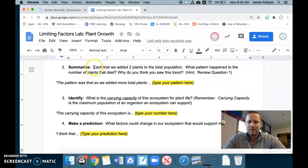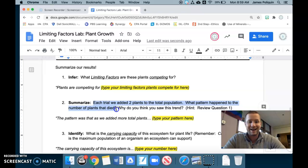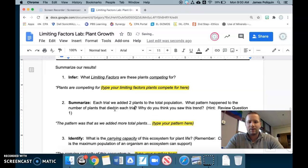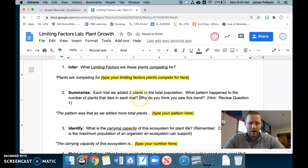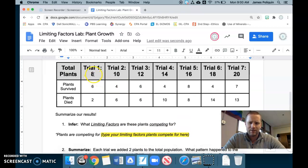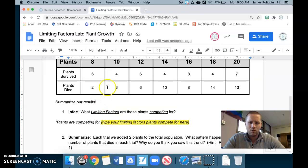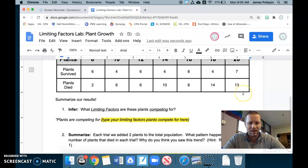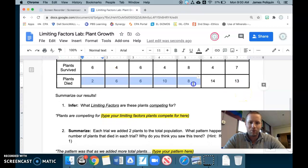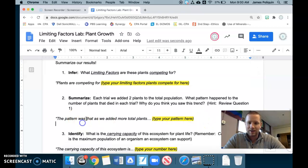Two. Let's summarize. Each trial, we added two plants to the total population. What happened to the number of plants that died in each trial? And then why do you think you saw this trend? So in trial one, we saw two plants die. We added two more plants, six died. We added two more plants, six died again. We added two more plants, 10 died. We added two more plants. Surprisingly fewer died, only eight. Then we added two more plants for 18, 14 of them died. And then we added two more plants, 13 of them died. So what tended to happen as we added more and more plants. As we added more total plants, what happened? Type your pattern in here.